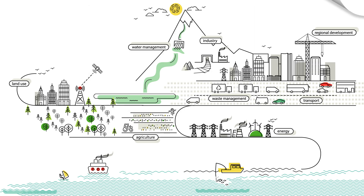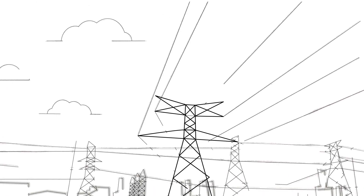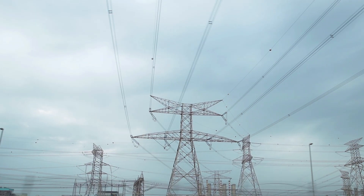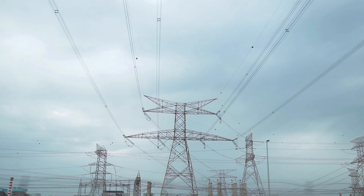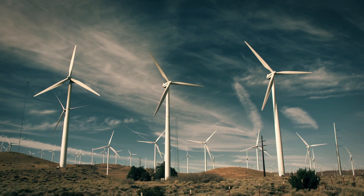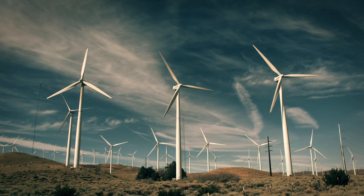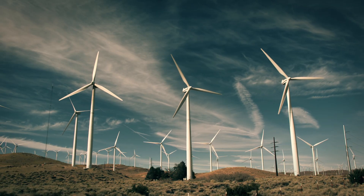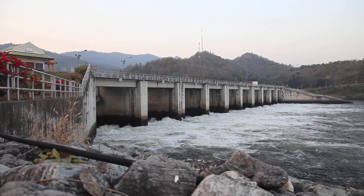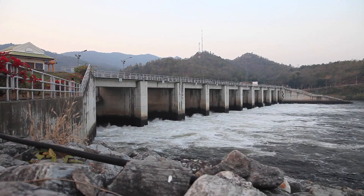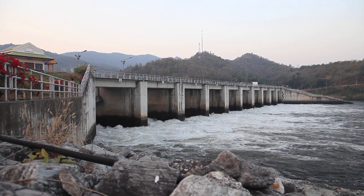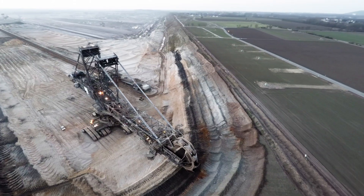Take as an example a national energy plan. It sets out how a country plans to generate and distribute energy. Once a plan or program is adopted, it defines what type of energy will be produced for years to come and directs investment decisions for construction, expansion or demolition projects.